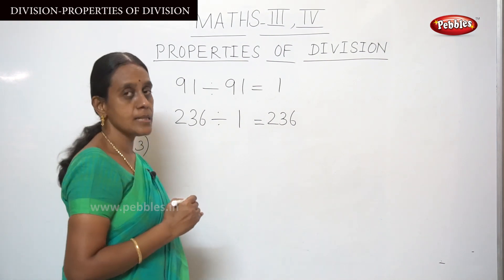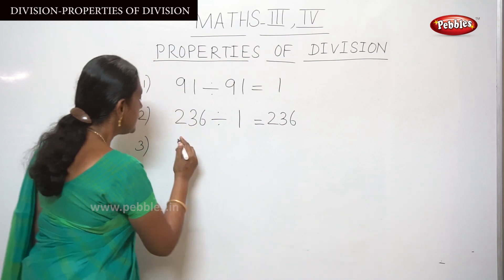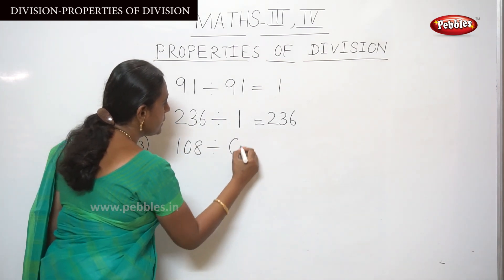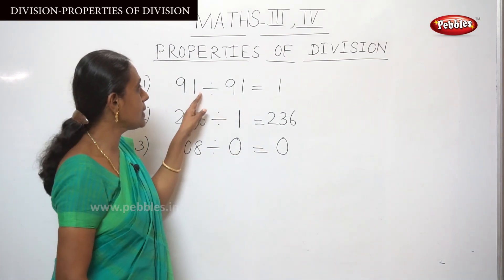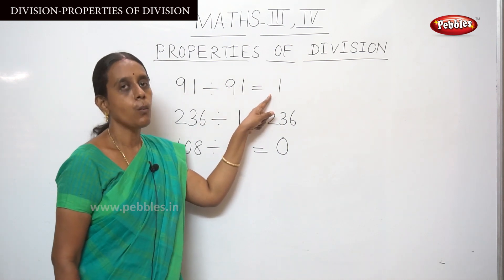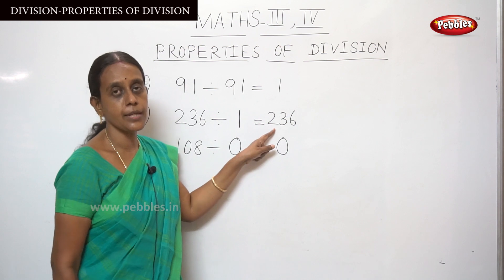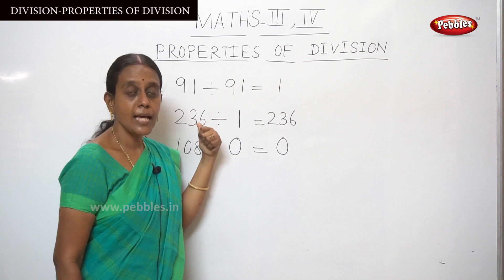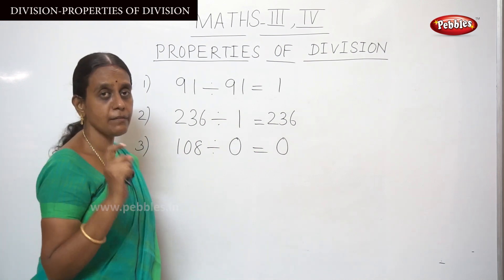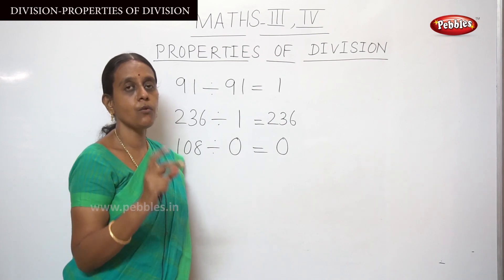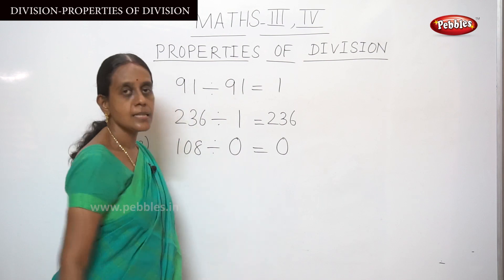The third property: if a number is divided by zero — for example, 108 divided by zero — division by zero is not possible. You can't divide any number by zero, so division by zero is not defined.